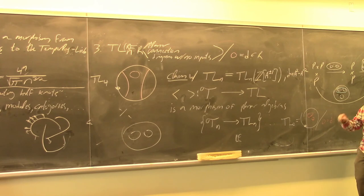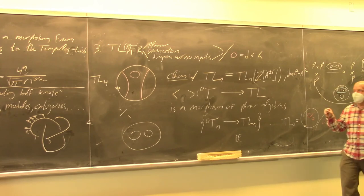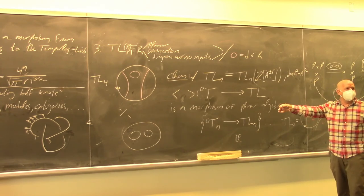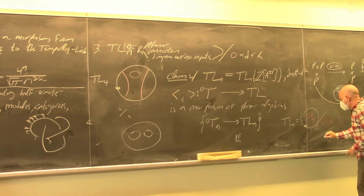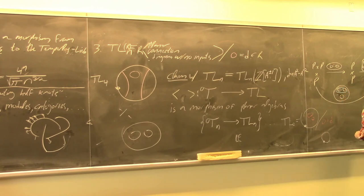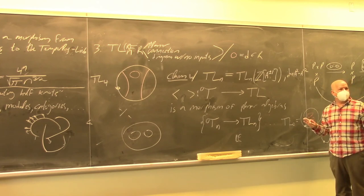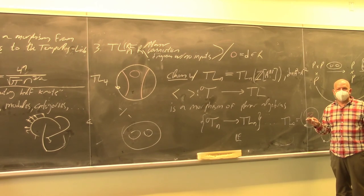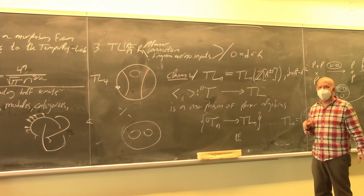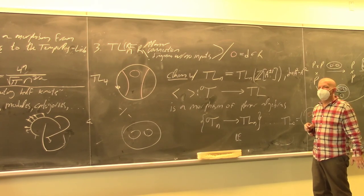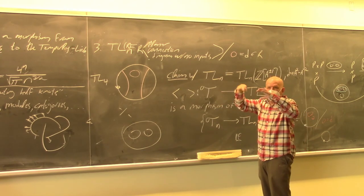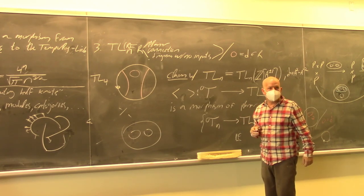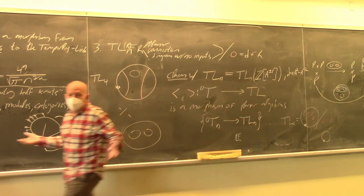Strictly speaking, the Kauffman bracket maps a knot — considered as a tangle — not to a Laurent polynomial, but to a Laurent polynomial times an empty circle with a base point on it. Another student asks: did you say the elements of the Temperley-Lieb algebra don't have crossings? Yes — they are planar connection diagrams, and in a planar algebra the connections don't have crossings. Okay, see you on Wednesday.